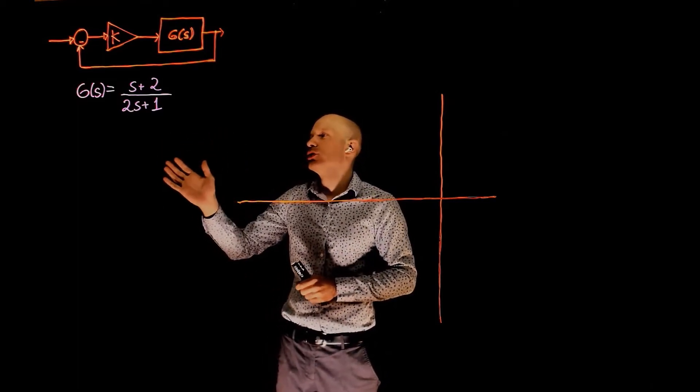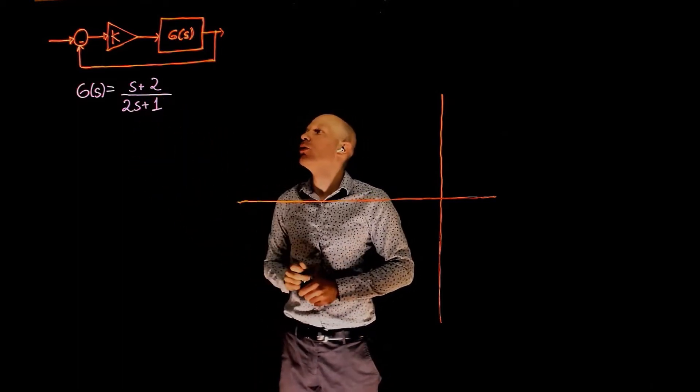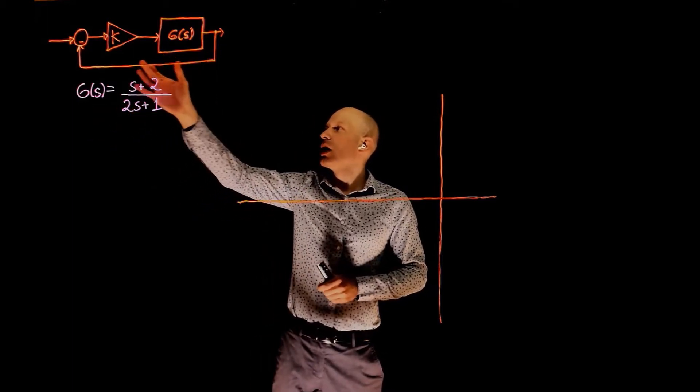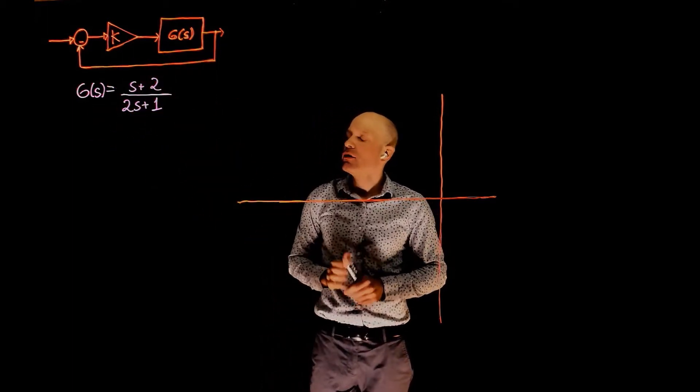Let's start with this simple function. We have one zero and one pole. Function g of s is used here, and we are now changing again k from zero to infinity.